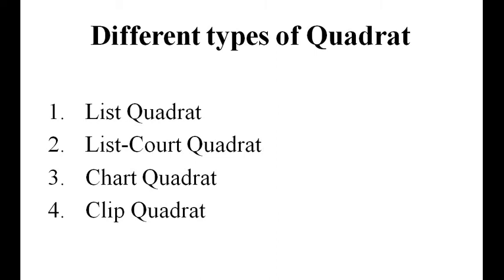A Clip Quadrat is used for the study of biomass or weight of each species. All individuals are uprooted and each fresh or dry weight is recorded.